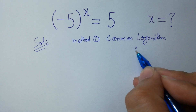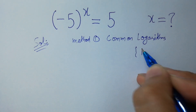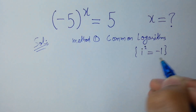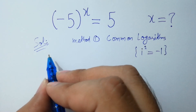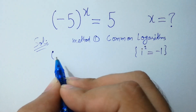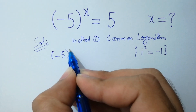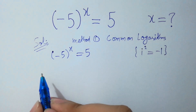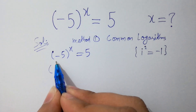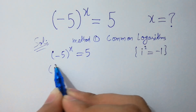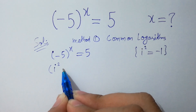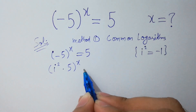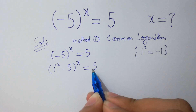As we know that i squared equals minus 1 in complex numbers. So, minus 5 to the power x equals 5 will be equal to i squared times 5 to the whole power x equals 5. I hope you understood.